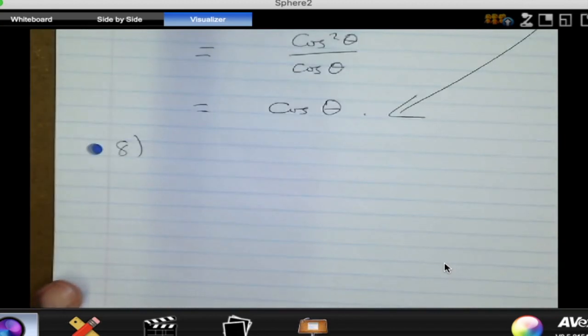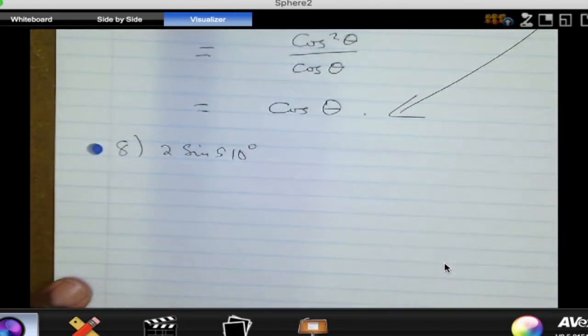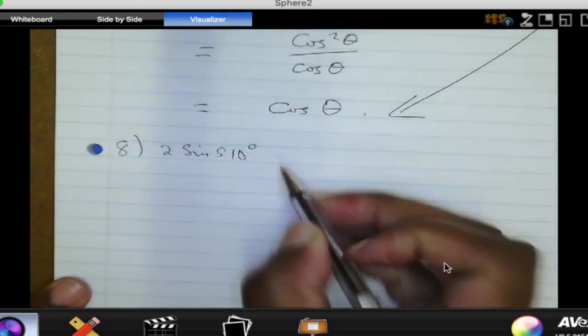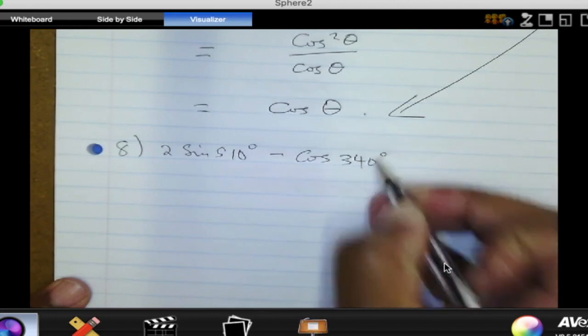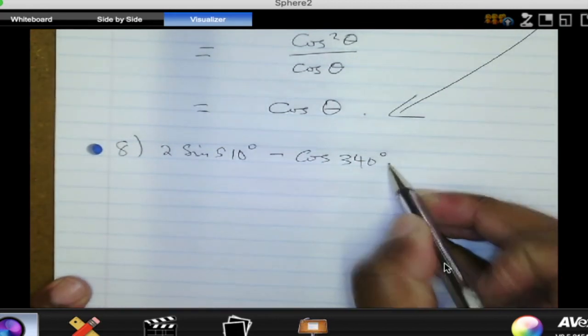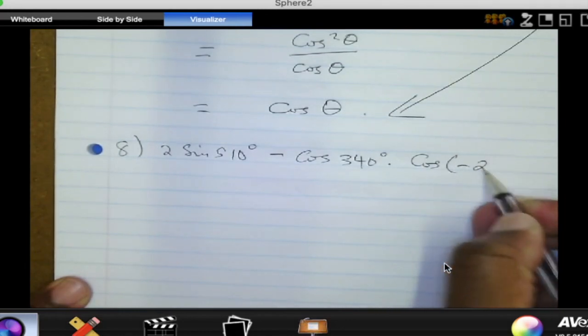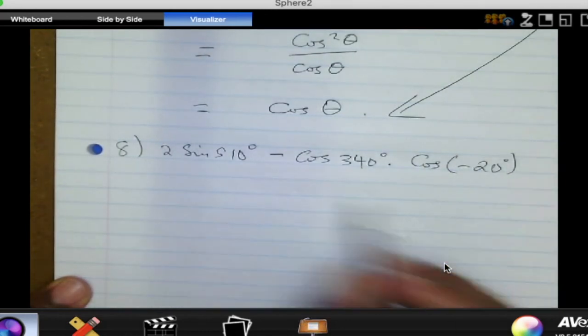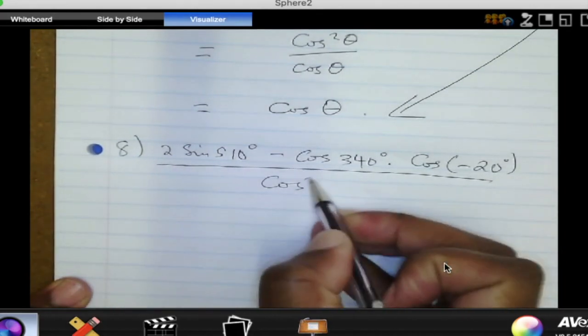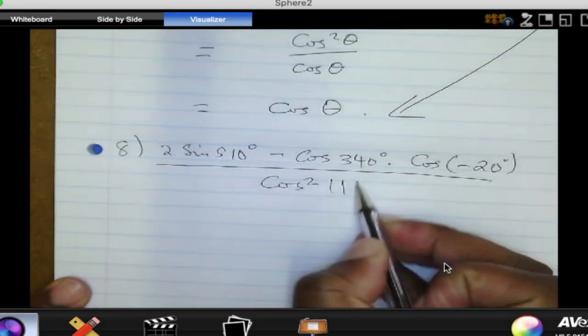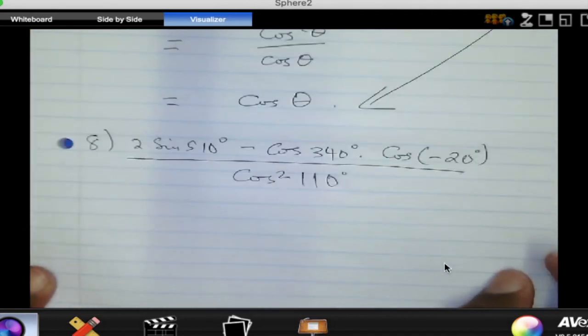That equals 2 sine 510 subtract cosine of 340 degrees, which is multiplied by cosine of negative 20 degrees, all divided by cosine squared of 110 degrees. Right. I'm happy because we can do these things quite fast.